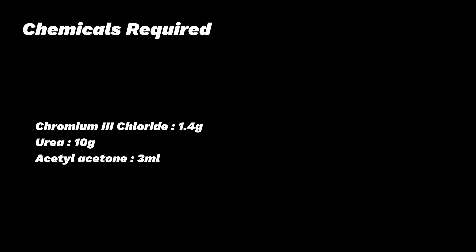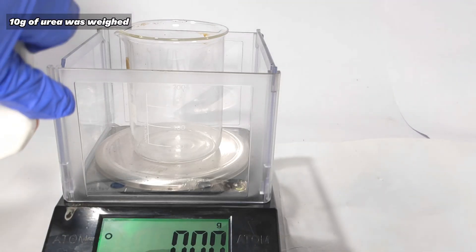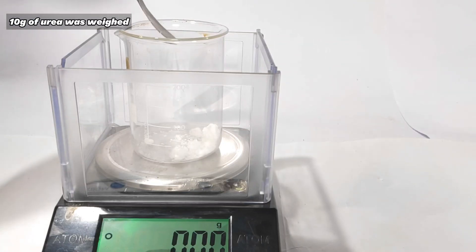For this experiment we will need 1.4 grams of chromium III chloride, 10 grams of urea, and 3 milliliters of acetylacetone. 10 grams of urea was weighed out in a 250 milliliter beaker. It was obtained from instant cold packs.